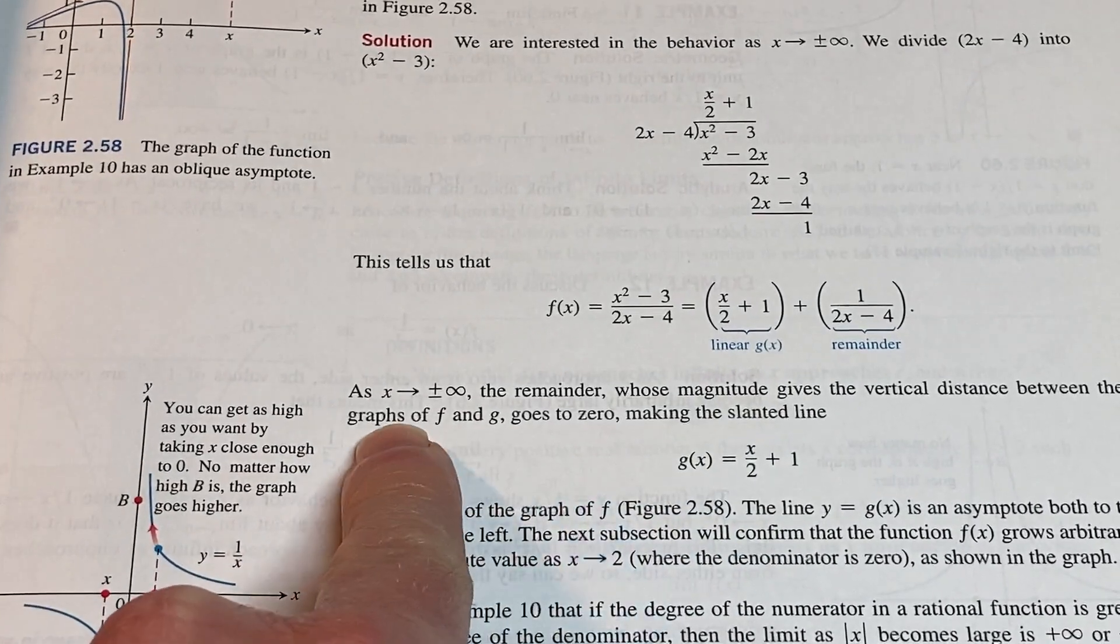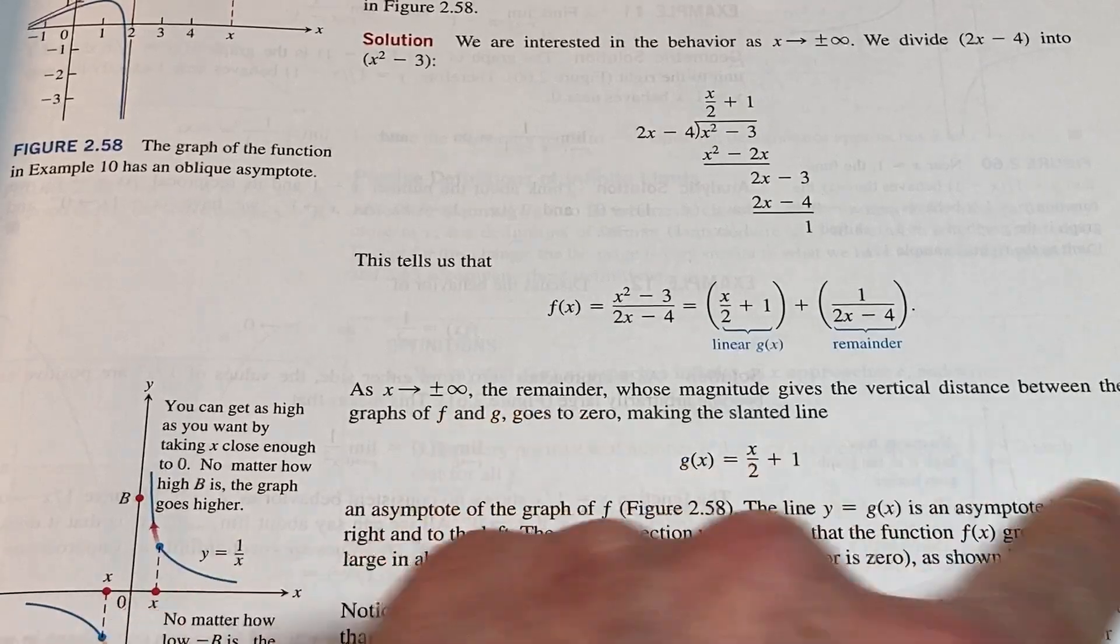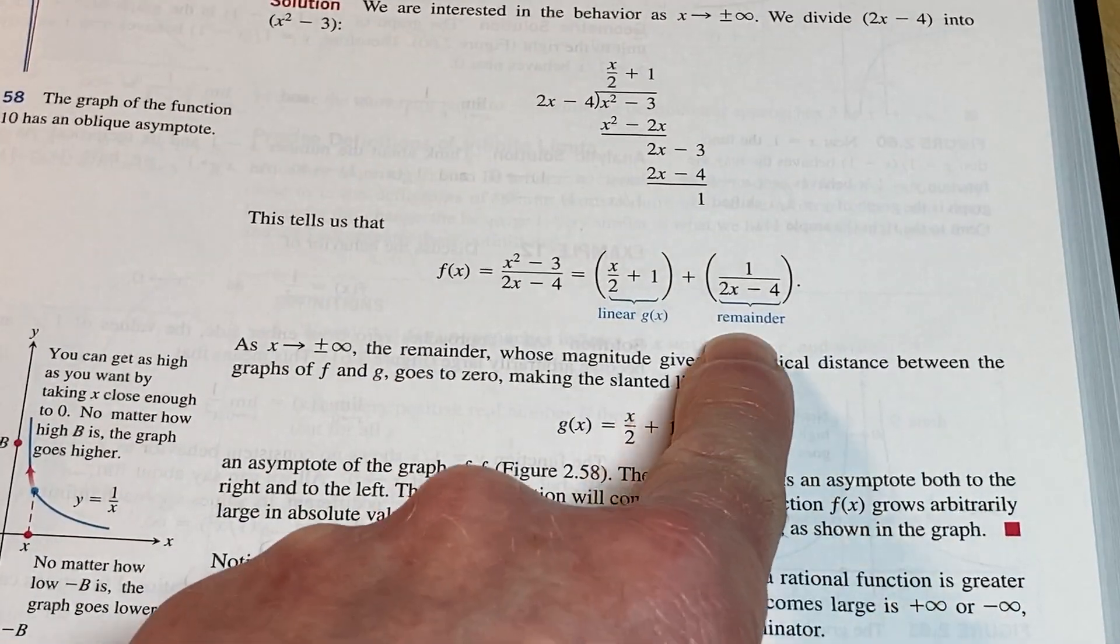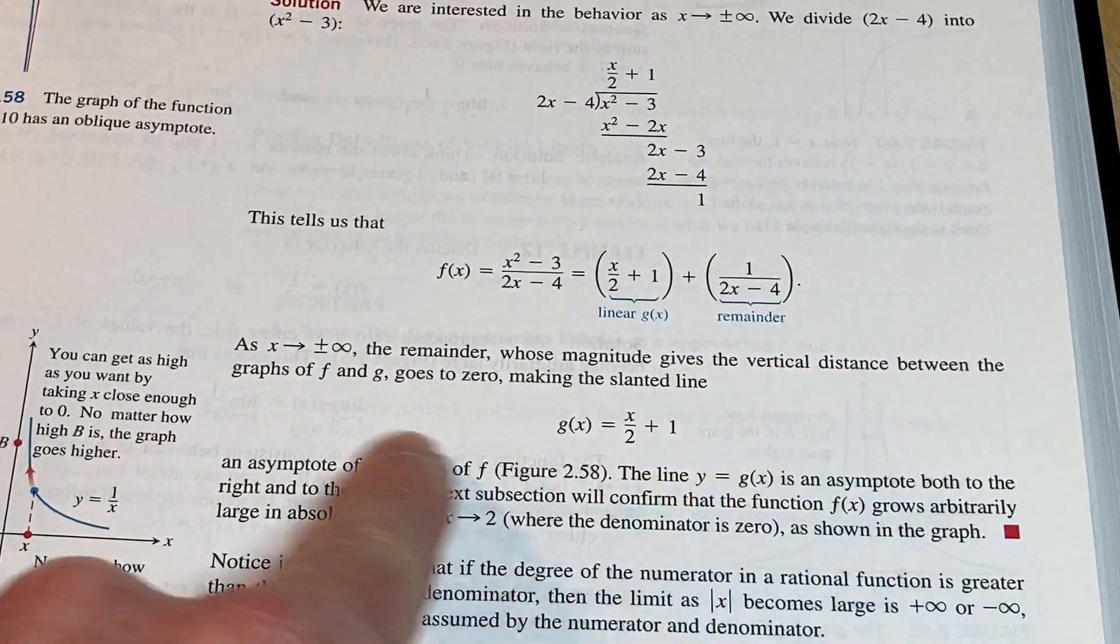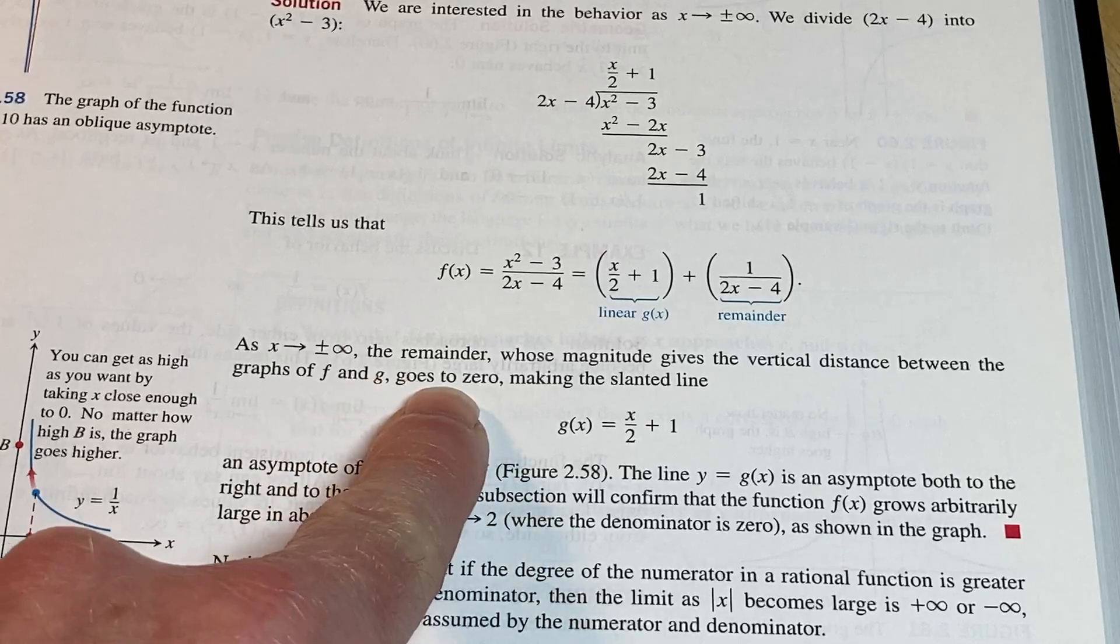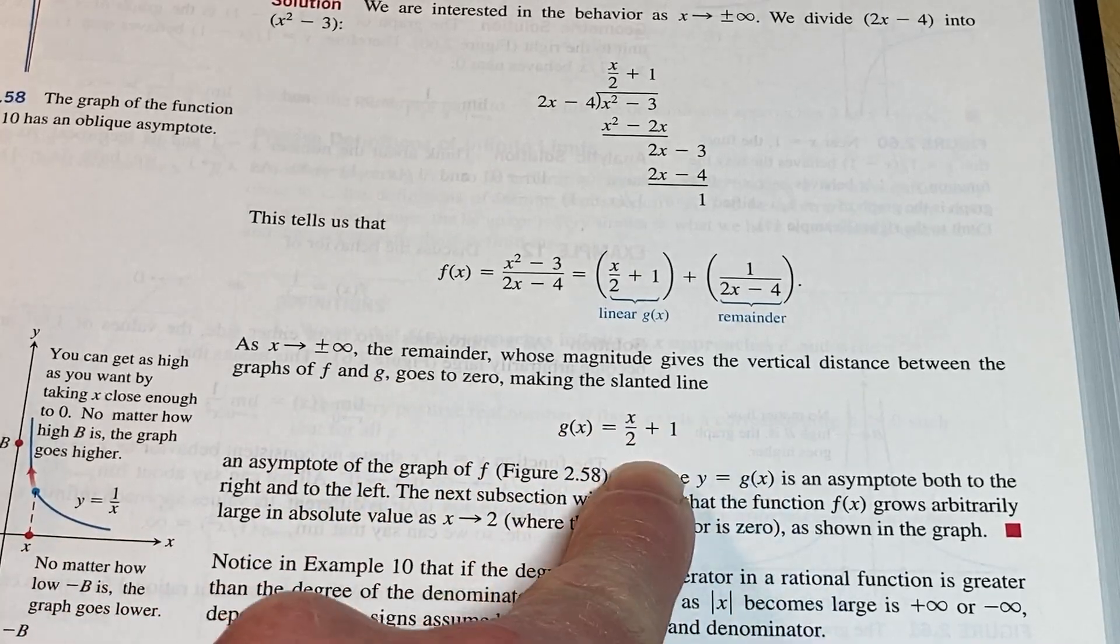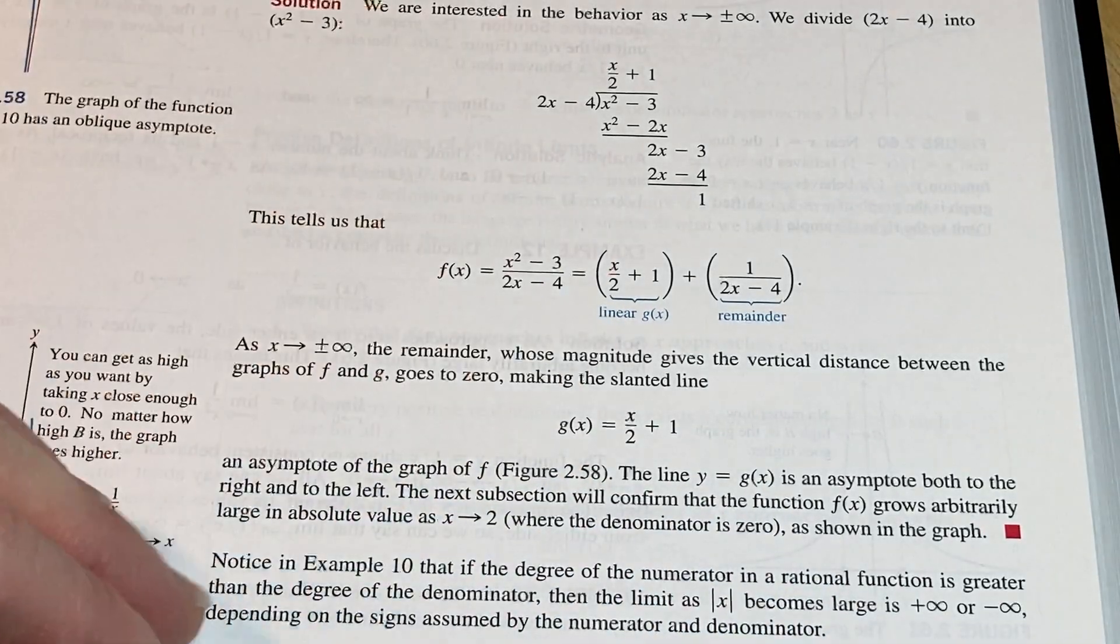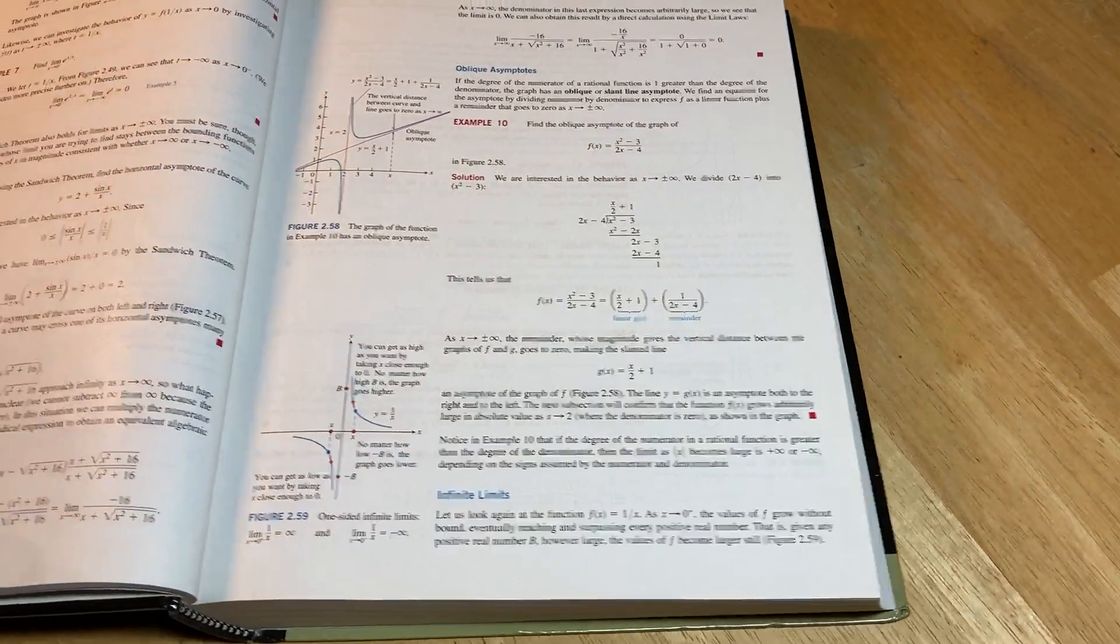As x approaches plus or minus infinity, the remainder, whose magnitude gives the vertical distance between the graphs of f and g, goes to zero, making the slanted line, boom, the oblique asymptote or the slant asymptote. So it explains really well. It's a really good calculus book.